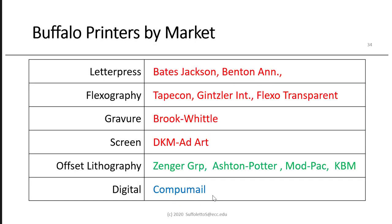In our local regional print market in Buffalo, New York: letterpress printers include Bates Jackson and Benton Announcements. Flexography includes Tapecon, Gensler Graphics (now Gensler International, recently changed to Resource Label Group), Flexo Transparent (recently changed to CP Packaging). The gravure printer in town used to be Arcata Graphics, but now it's Brook and Whittle. Screen printing — the big one would be DKM Ad Art. Offset lithography printers include the Zenger Group, Ashton Potter, Mod Pack Packaging, and Keller Brothers and Miller on Franklin Street (KBM). In digital, the big printer would probably be Copymail.